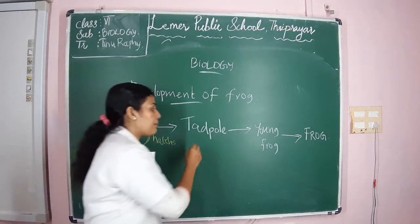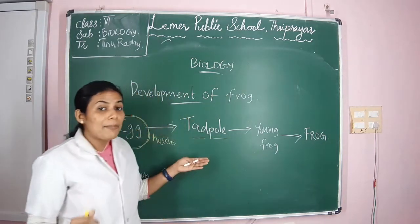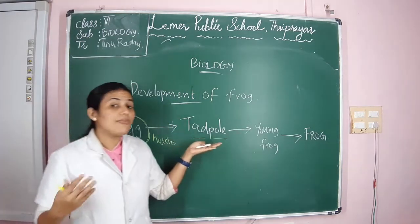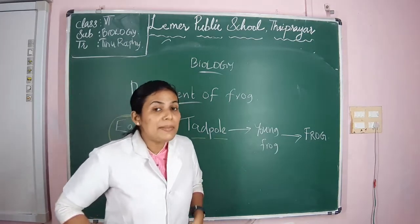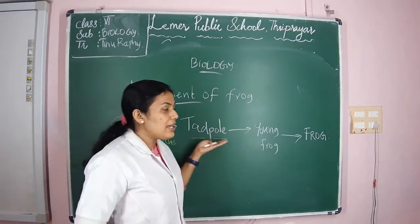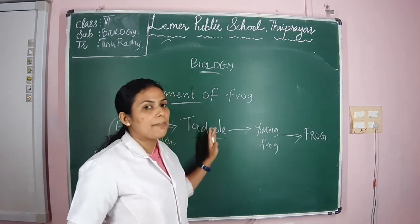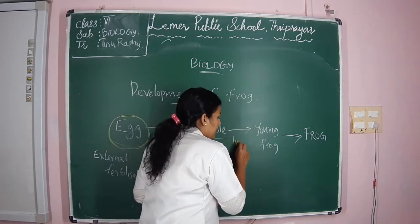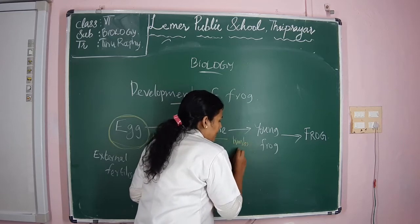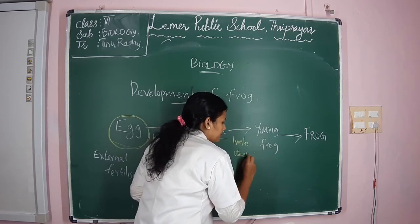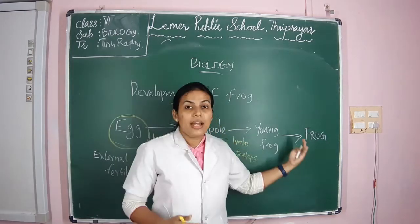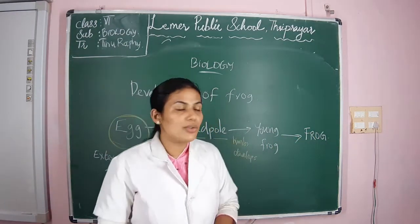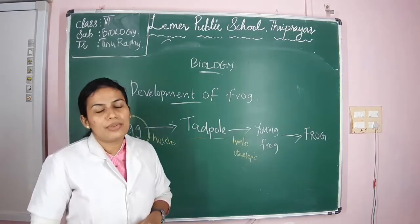What is the nature of the tadpole? Tadpoles are fish-like larvae and they are free-swimming in nature. After a few days the limbs develop, and this tadpole becomes the young frog. After that, the young frog develops into the adult frog. That is how the development of the frog happens.